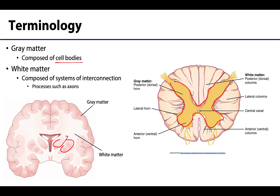We call these wings horns, which are functionally important, and we will get into that in more detail in the next video. White matter is composed of systems of interconnection, primarily aggregations of myelinated axons — which gives that whitish color — but also some unmyelinated axons. White matter in the spinal cord surrounds that inner core of gray matter, whereas white matter in the brain is intermediate in depth.